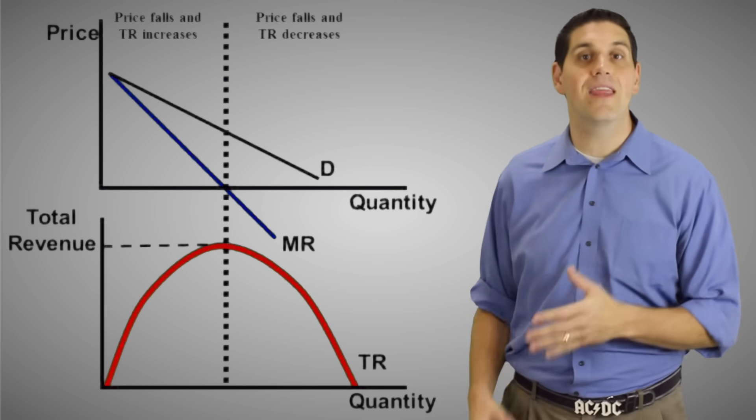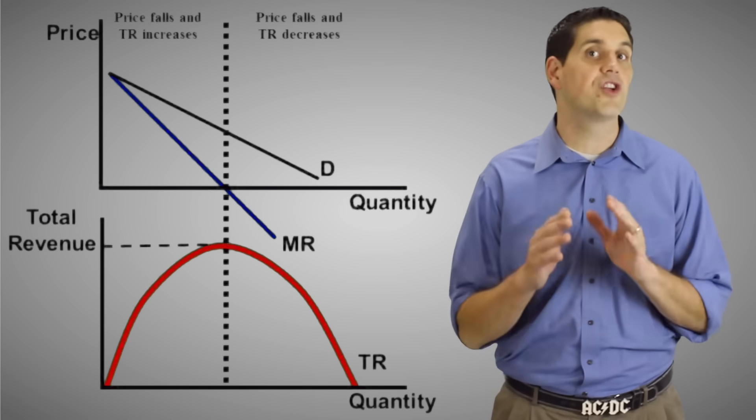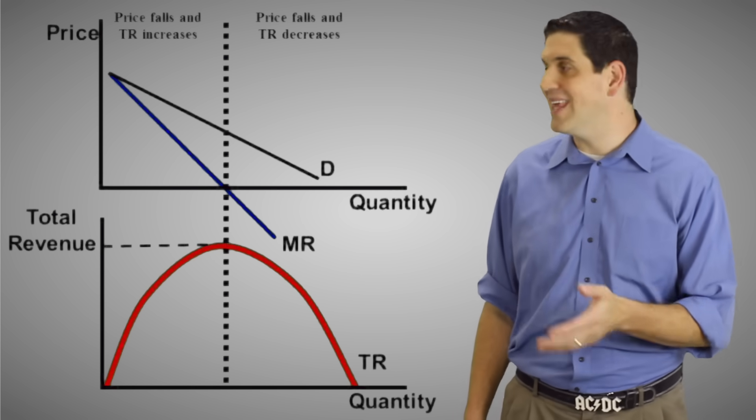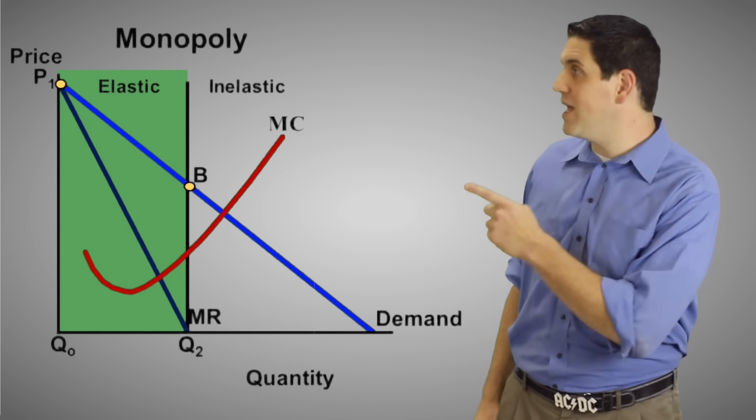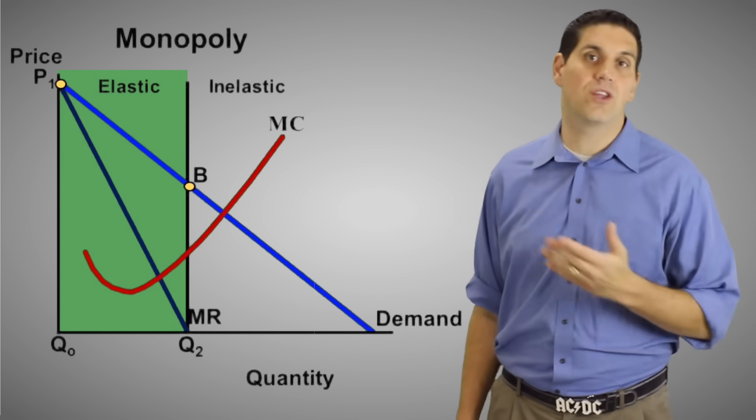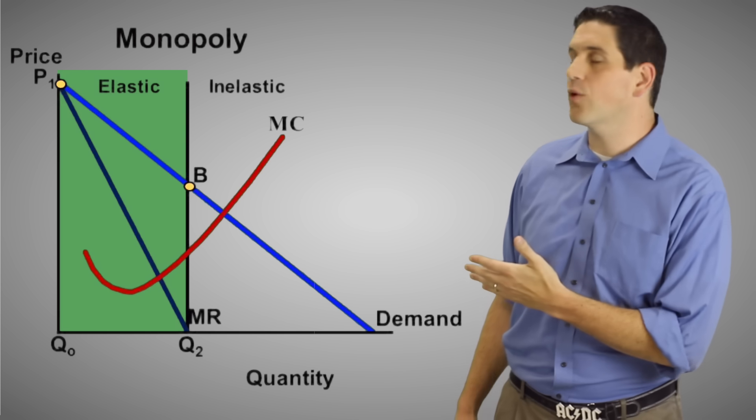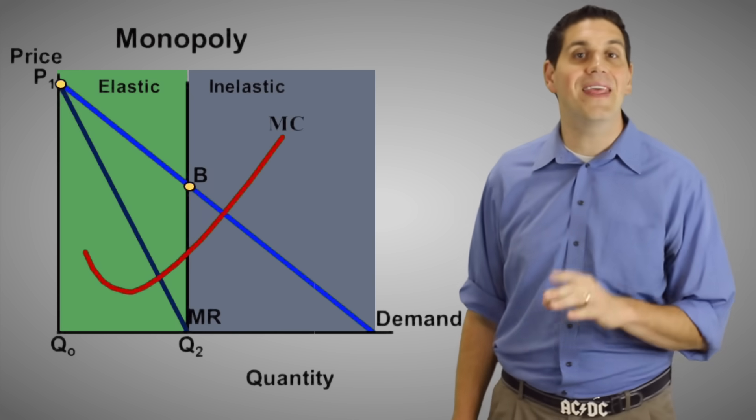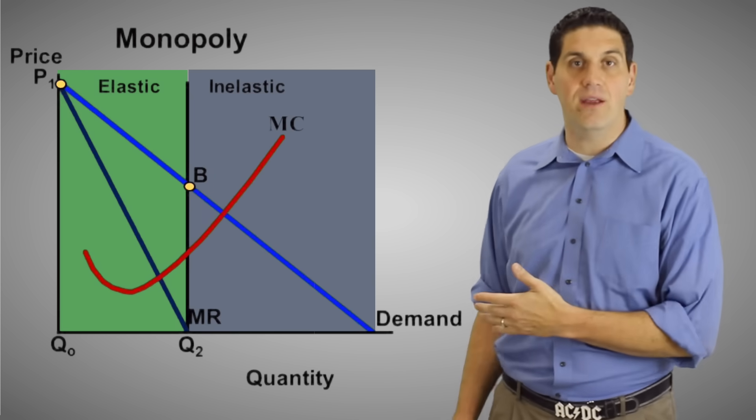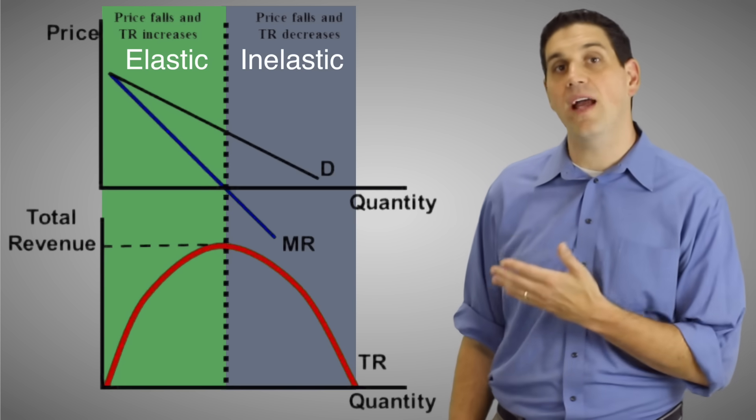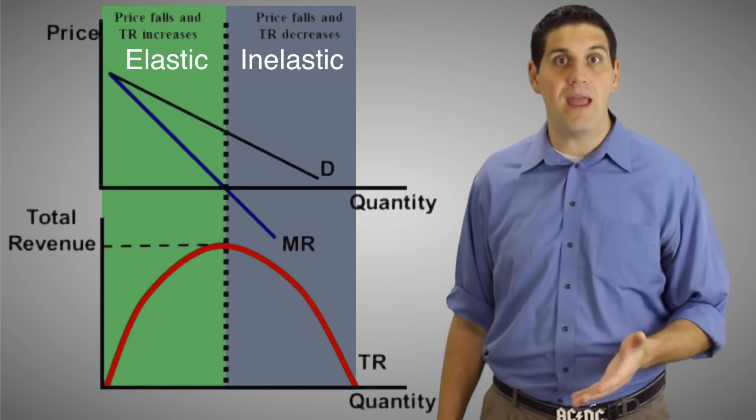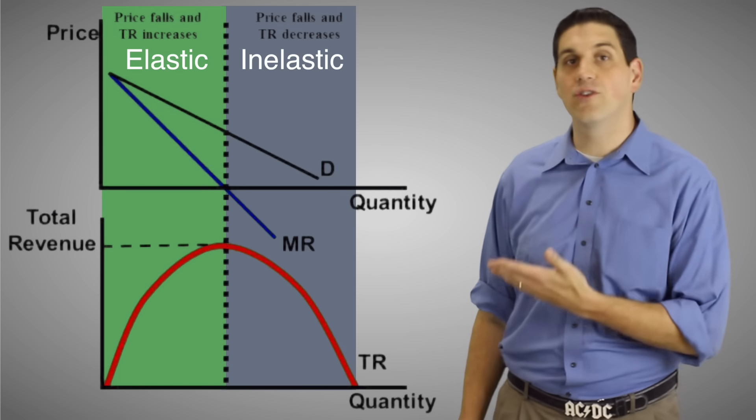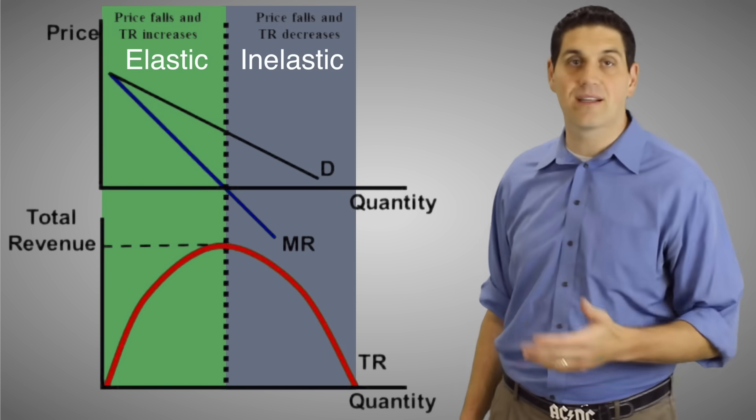Now if you take this idea of total revenue and you connect it to something you've learned before called the total revenue test, you can spot the elastic and inelastic range. The elastic range of the demand curve is segment P1 to B, or you could have said any quantity less than Q2. The point is the elastic range is where MR is positive and the inelastic range is when MR is negative. This is because in the elastic range, the price is falling, but total revenue is going up, which is the whole idea of elastic demand. When the price is going down and total revenue is going down, that's the idea of inelastic demand. Did you get all that?